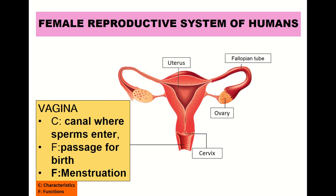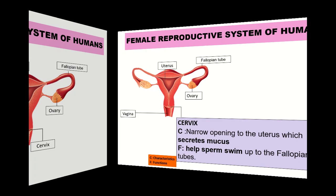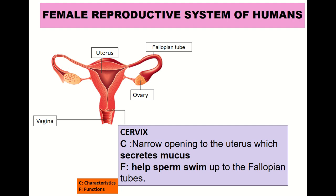The next part is the vagina, which is a canal where sperm will enter. It also serves as a passage for birth and for menstruation. Last but not least is the cervix, which is a narrow opening to the uterus that secretes mucus and functions to help sperm swim up to the fallopian tube.